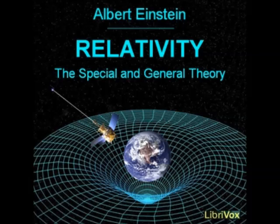Newton saw this objection and attempted to invalidate it, but without success. But E. Mach recognized it most clearly of all, and because of this objection, he claimed that mechanics must be placed on a new basis. It can only be got rid of by means of a physics which is conformable to the general principle of relativity, since the equations of such a theory hold for every body of reference, whatever may be its state of motion.